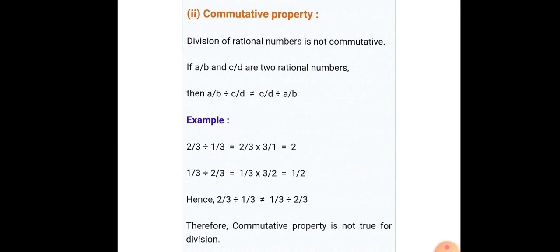Commutative property: division of rational numbers is not commutative, because if you divide two different rational numbers in different orders, you always get different results. Here, 2/3 ÷ 1/3 gives 2, but when we change the order we get 1/2. Therefore, commutative property is not true for division.